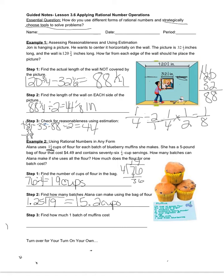Now let's think about that. Can you really make 0.2 of a batch? If a recipe calls for an egg, you can't use 2 tenths of an egg. So really, from this bag of flour, she can make 15 full batches.